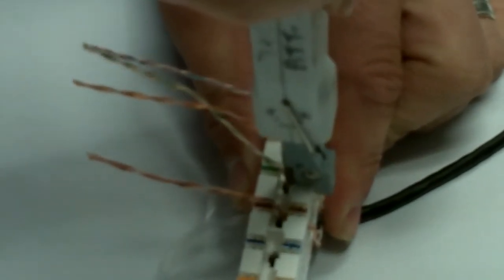Grab your Krone specific punch tool. Cutter facing down. Punch them in.